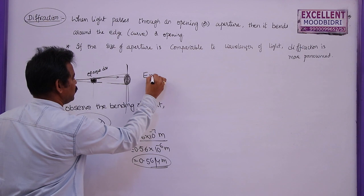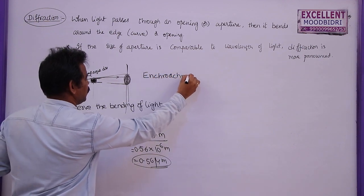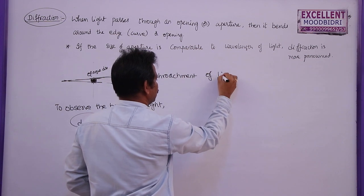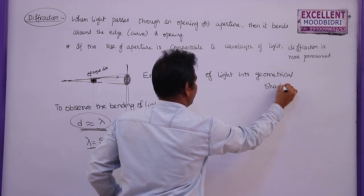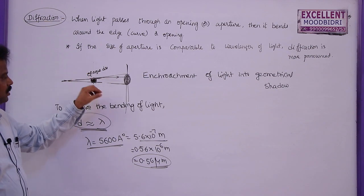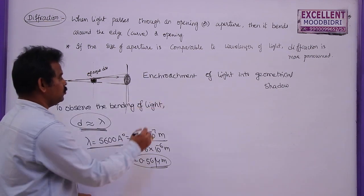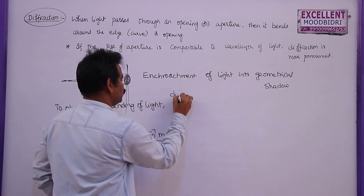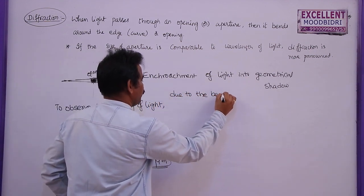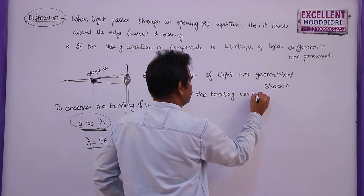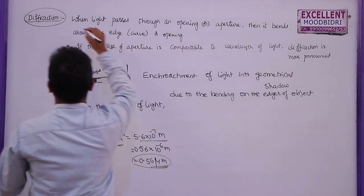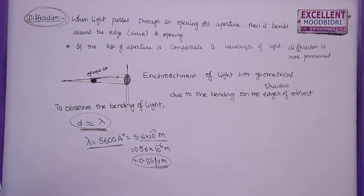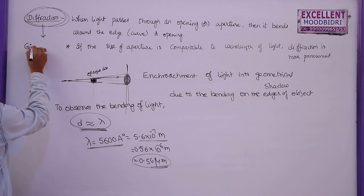This is called encroachment of light into the geometrical shadow, because the shadow is similar to the geometrical shape of the disc. So the encroachment of light into the geometrical shadow due to bending on the edges of an object is also called diffraction. This diffraction was discovered by a scientist called Grimaldi.